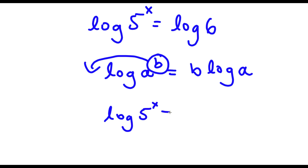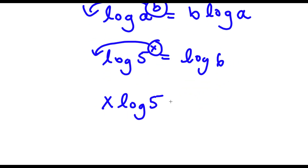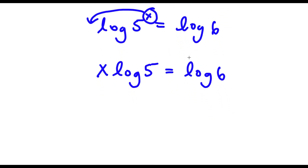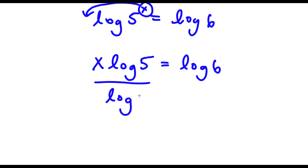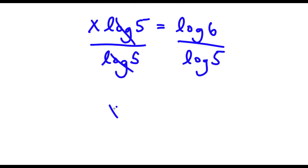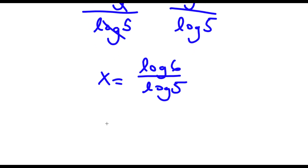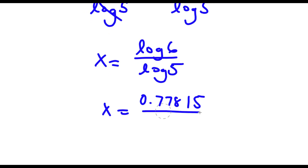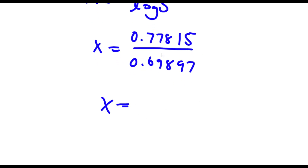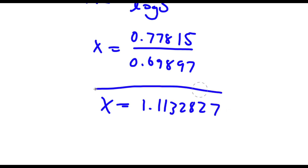So I have log 5 to the power of x is equal to log 6, and now if I move x to the front, I get x times log 5 is equal to log 6. Now I'm simply going to divide both sides by log 5. These two cancel out and I'm left with x is equal to log 6 over log 5. Log 6 equals 0.77815 and log 5 equals 0.69897. Dividing these gives 1.1132827. So this is my answer.